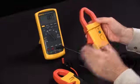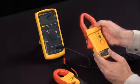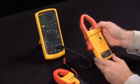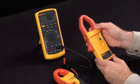At Fluke we have the AC and DC current clamps, just one of the many ways you can extend the capabilities of your digital multimeter.